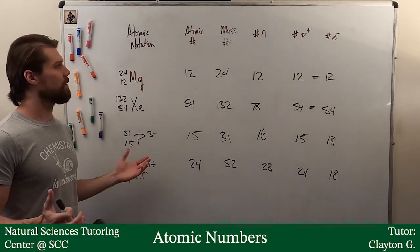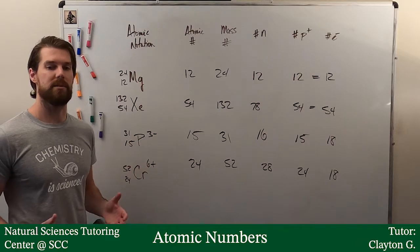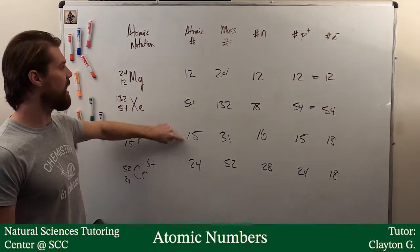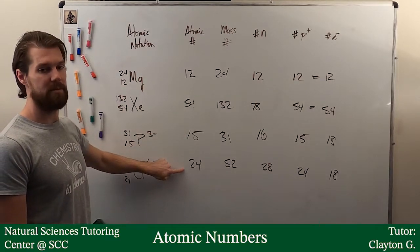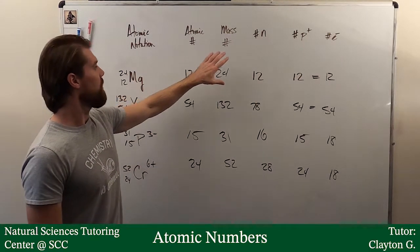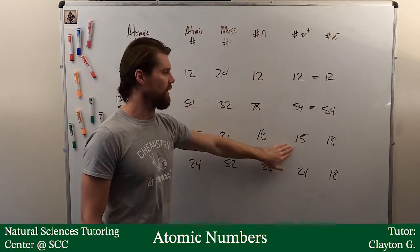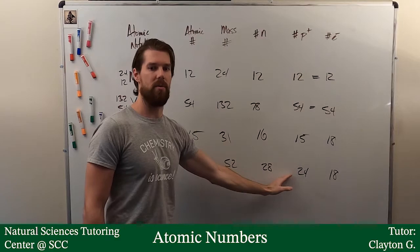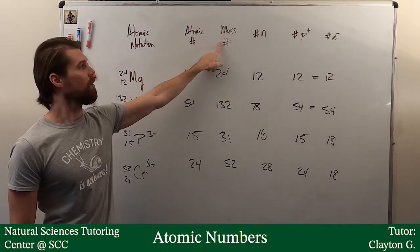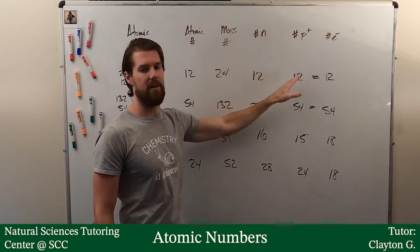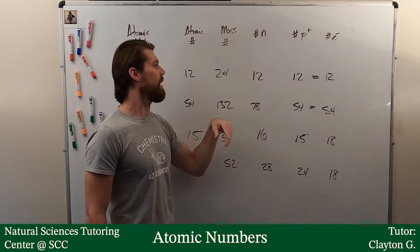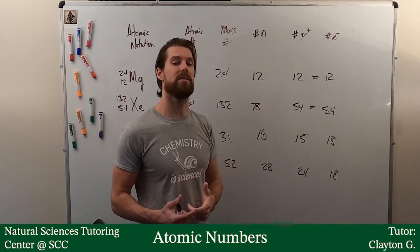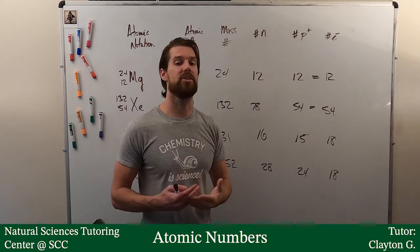So maybe it looks a little intimidating in this big table, but remember your definitions. The atomic number defines the element. The atomic number also tells us how many protons we have, so if we know the atomic number we already know at least one other thing. The mass number is the neutrons and protons added together.